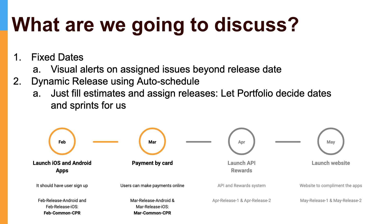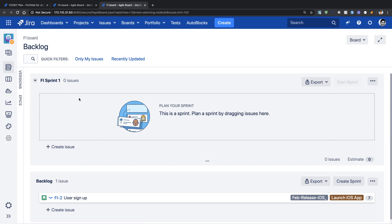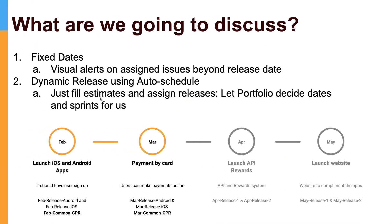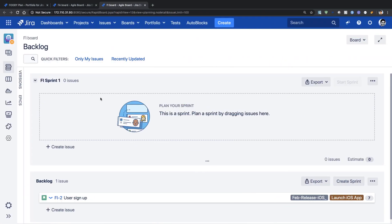Let us take a look at our project first. Right now we are talking about this iOS project, and just to give you a quick summary of what we are trying to do — we are trying to create a mobile app on iOS and Android. This is the schedule; we are talking about releasing something in February and March when it comes to the mobile app.